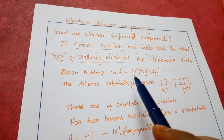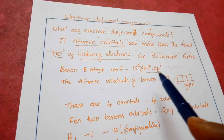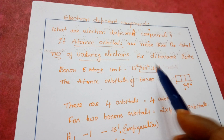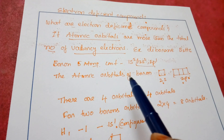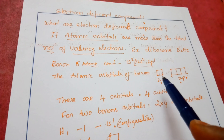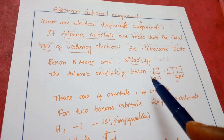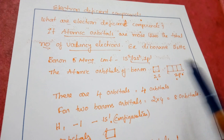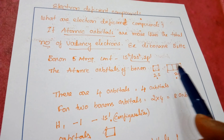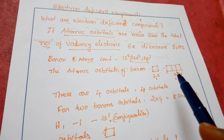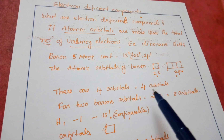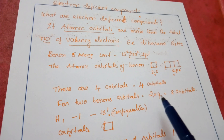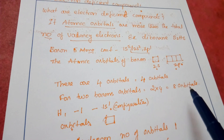The electronic configuration of boron is 1s² 2s² 2p¹, so the valence shell electrons occupy 2s and 2p orbitals: 2px, 2py, and 2pz. Counting these orbitals gives us 4 orbitals per boron atom. Since there are 2 boron atoms in diborane, that gives us 4 × 2 = 8 orbitals from boron.